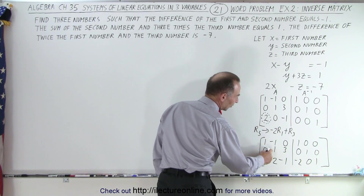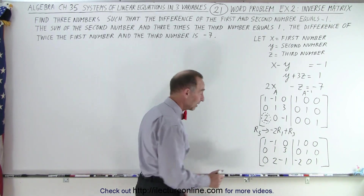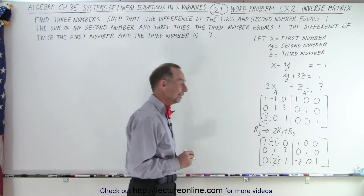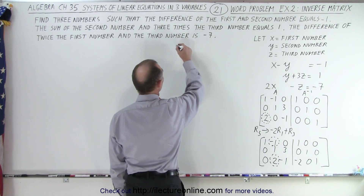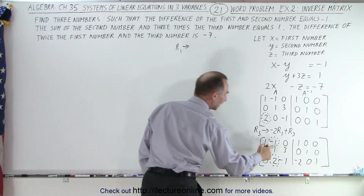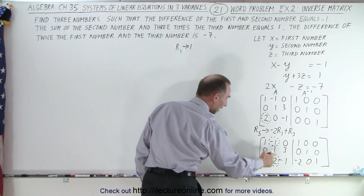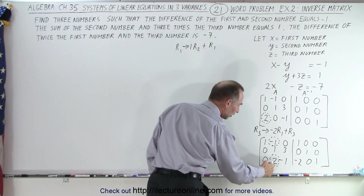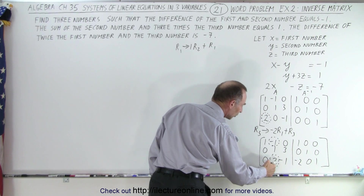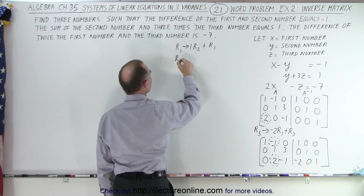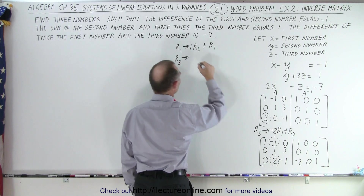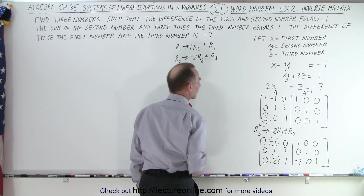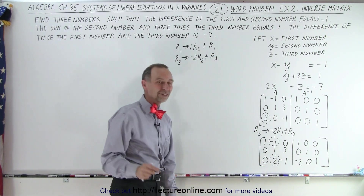The next thing I want to turn the second pivot into a 1 — it already is a 1, so I don't have to do anything there. That means I want to turn the entries above and below it into 0. I can do that by taking R1 and replacing it by the negative of that number, which is positive 1, times R2 and adding it to R1. To get rid of the entry in the third row, I take R3 and replace it by the negative of that number — negative 2 — times R2 and add it to R3.